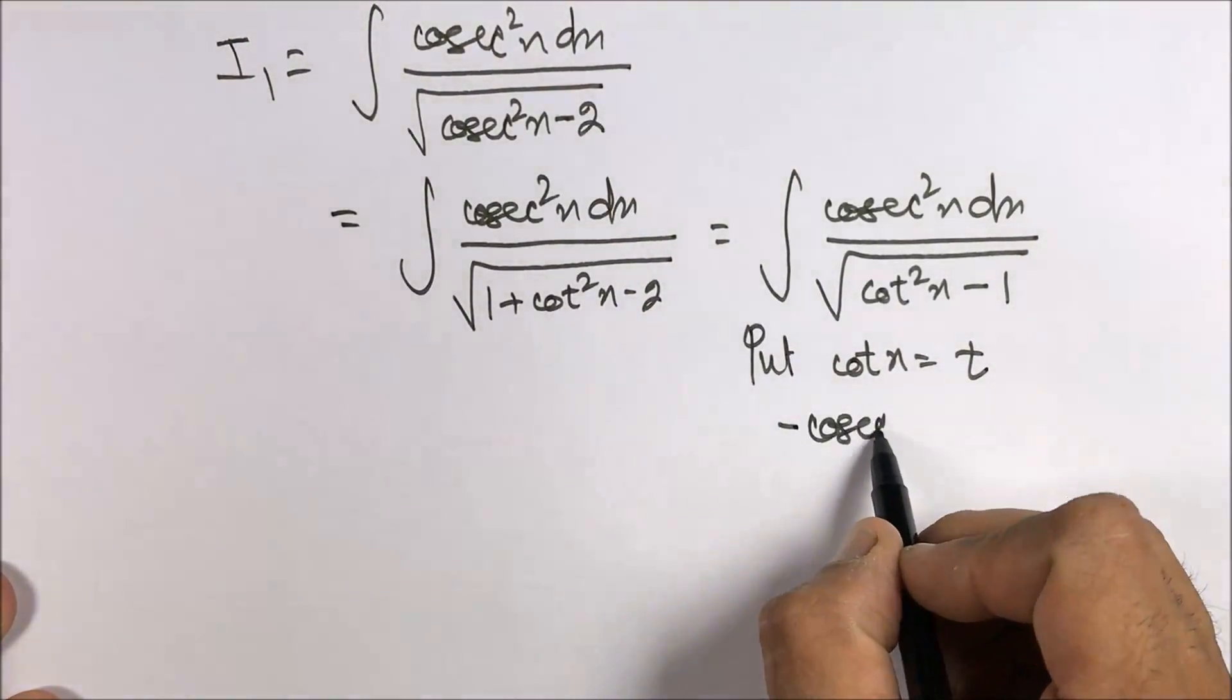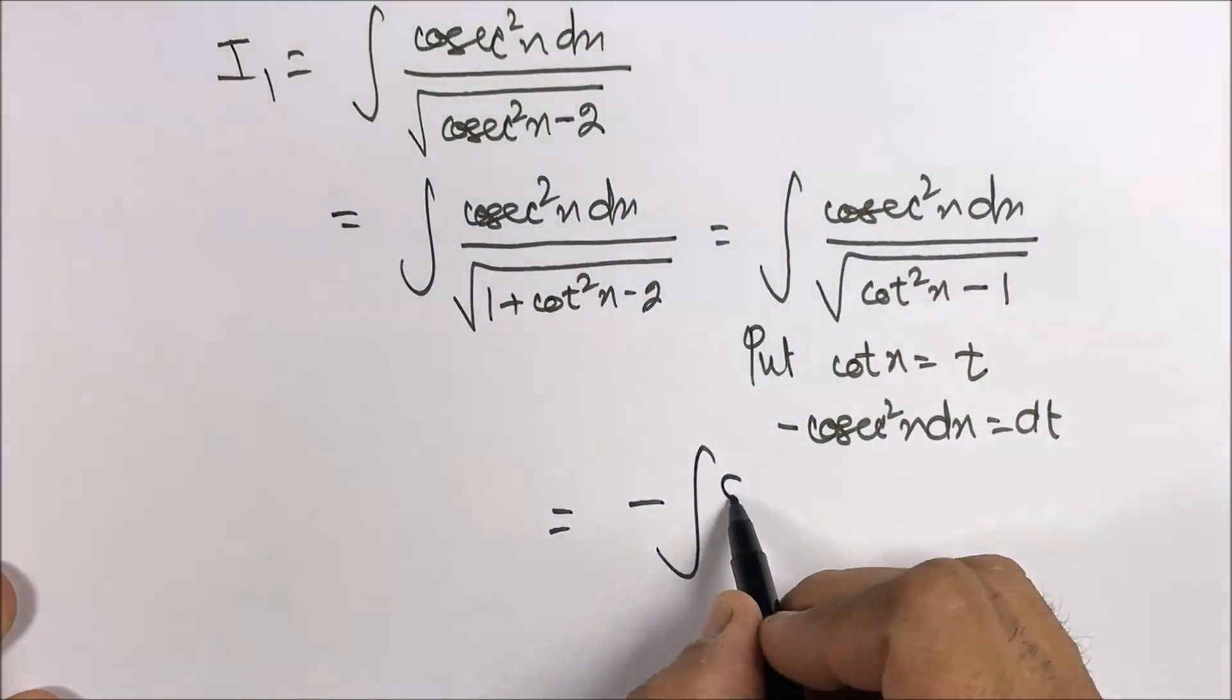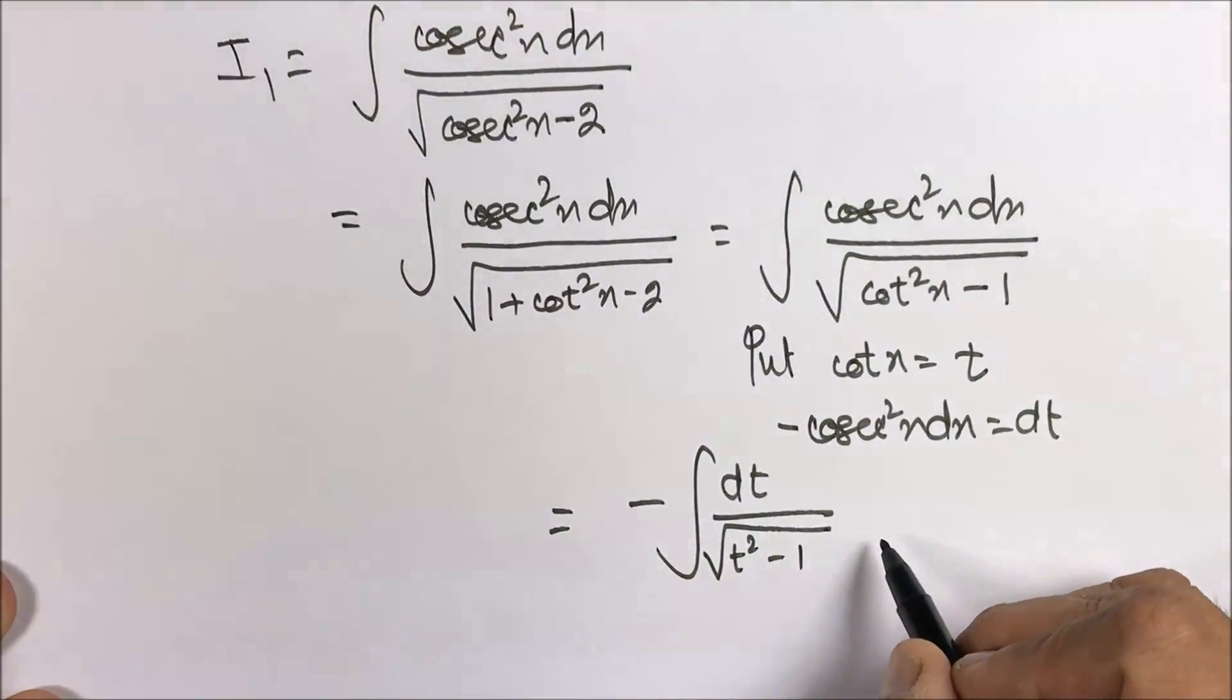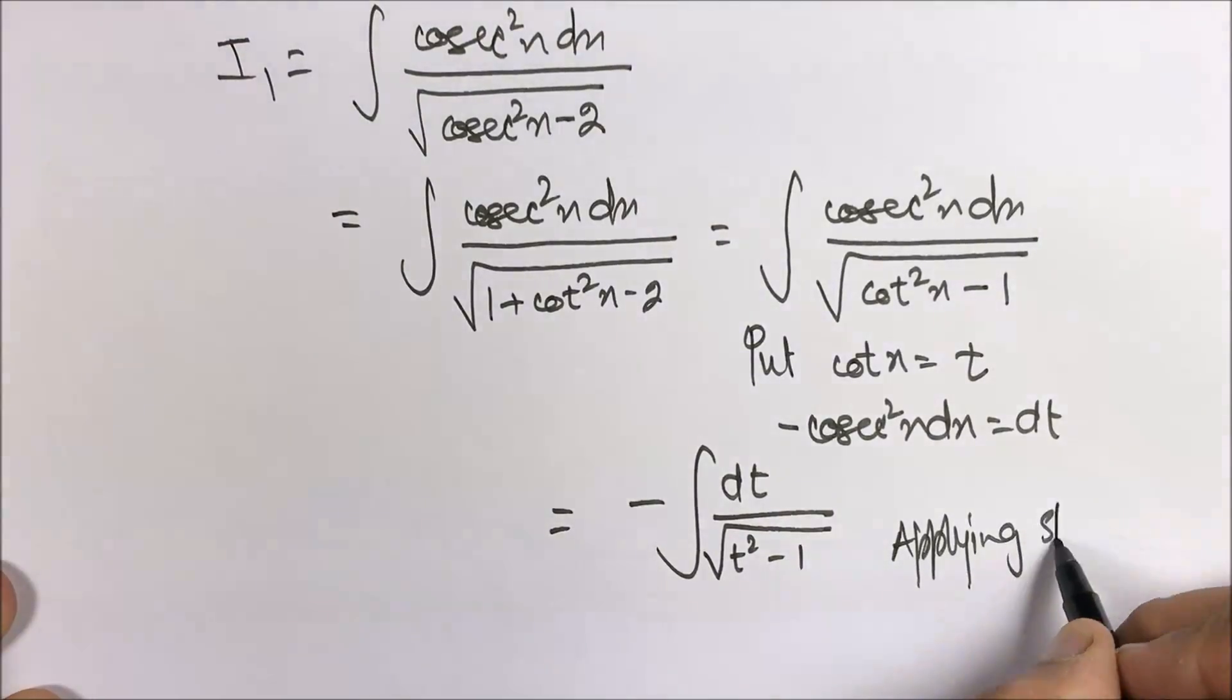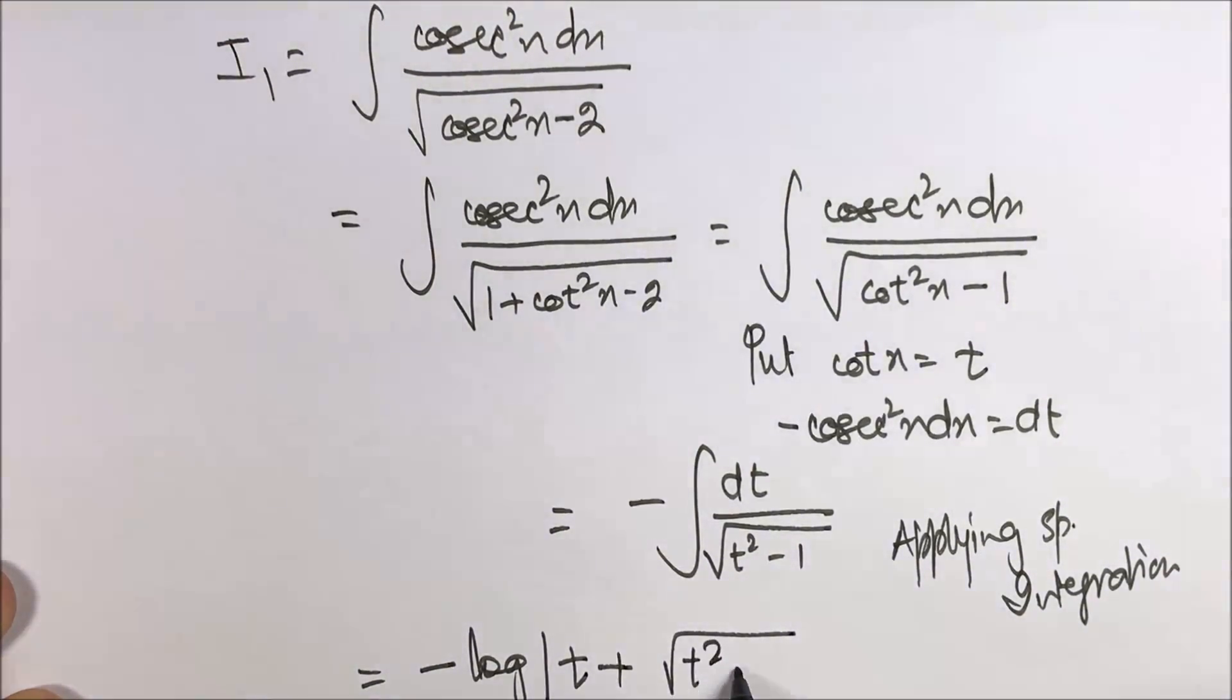Now you can put cot x equals t to get minus cosecant square x dx equals dt. So this is minus dt upon under root of t square minus 1, which is our special integration.